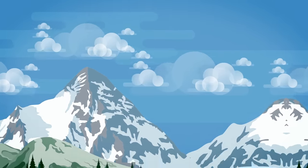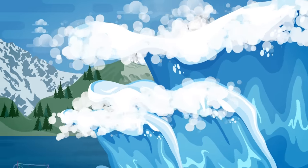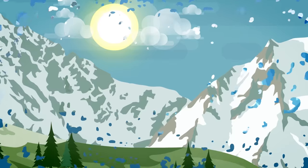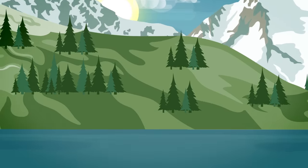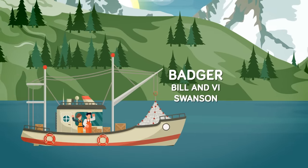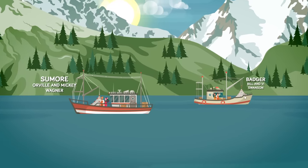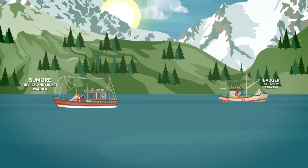Unfortunately, not everyone was as lucky as Howard and Sonny, and managed to ride the mega tsunami. Some would succumb to the giant wave. There were two other boats in the bay on that historic day. A boat owned by Bill and Vi Swanson, named the Badger, and a boat named Sunmore, owned by another couple, Orville and Mickey Wagner. Both those couples were actually friends and prior to the incident had waved across the water and said hello.